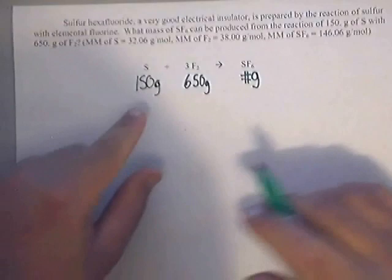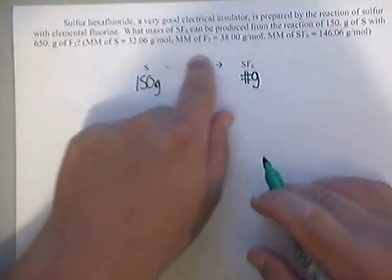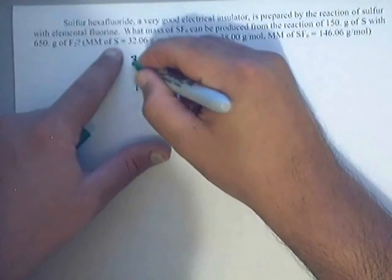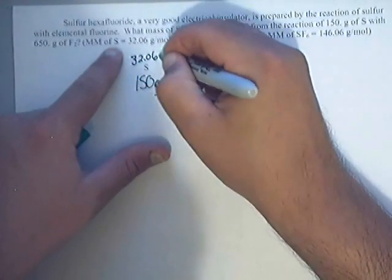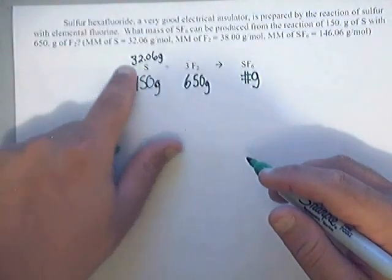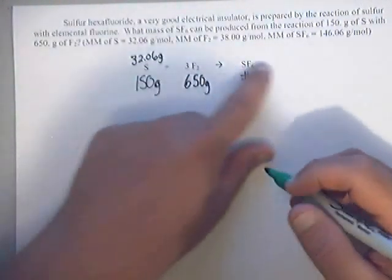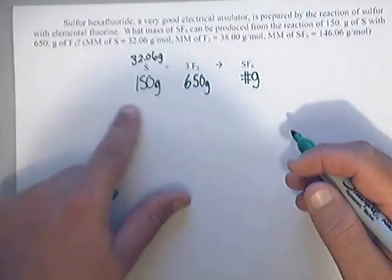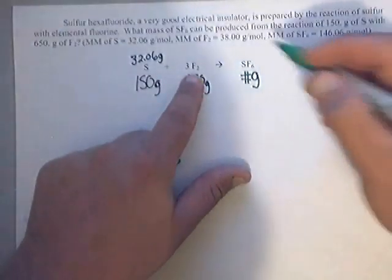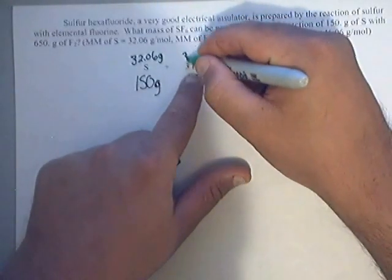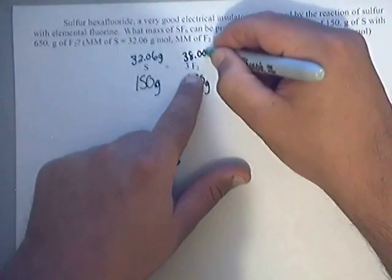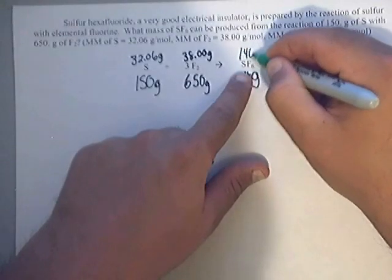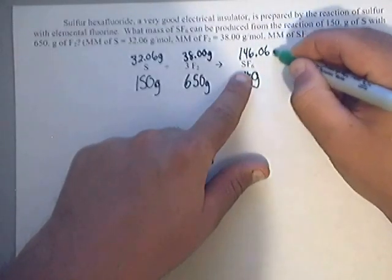Alright, what I like to do is I also like to label the molar masses up here. The molar mass of sulfur is given up here, it's 32.06. Now this is just me but I like to write the molar masses above the reactants and products and write down any of the given information below the equation. Now they told us the molar mass of F2 is 38.00 grams and the molar mass of SF6 is 146.06 grams.